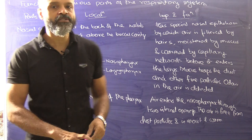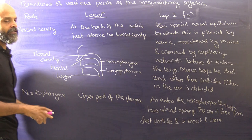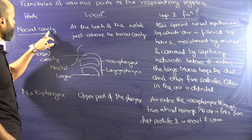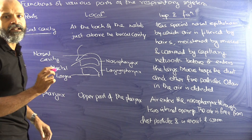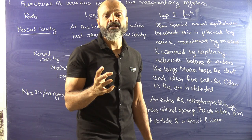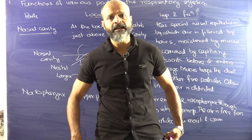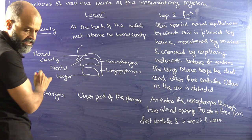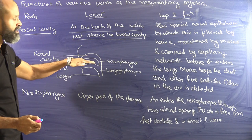We have here the functions of various parts of the respiratory system. We will go into the various parts and understand their basic functions. The nasal cavity — here is the nostril and here is the nasal cavity. The nasal cavity can be divided into three parts. Its basic function is to free the air from dust particles and bacteria, and it also regulates the temperature of the air before it enters the lungs or the alveoli. The nasal cavity is located at the back of the nostrils, just above the buccal cavity.